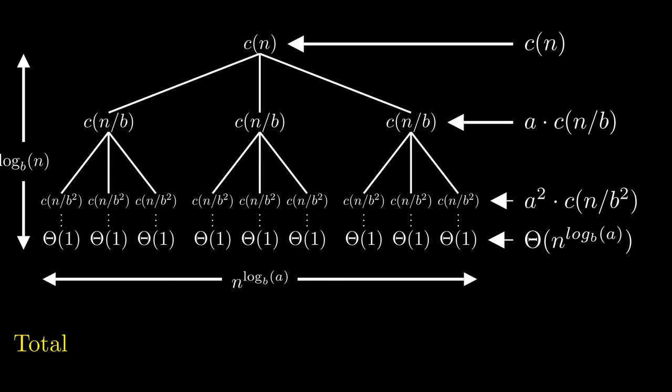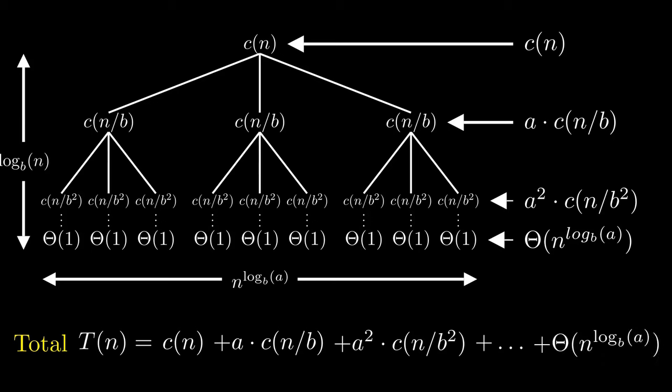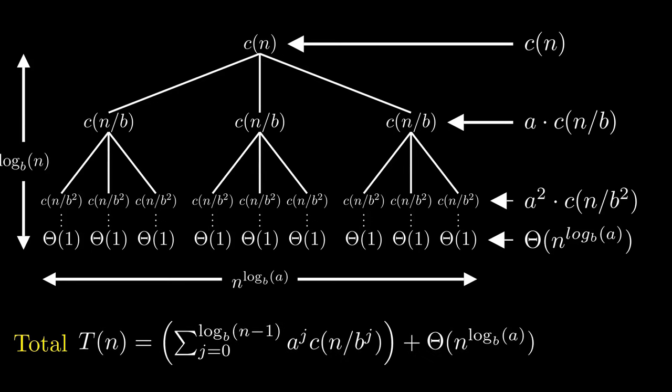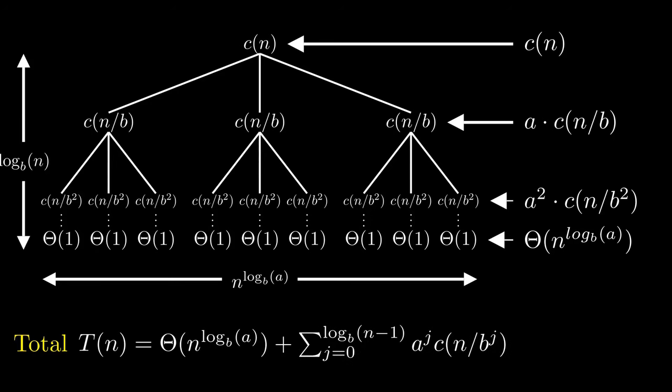From this, we can find a closed form of the recursion. Let's just write it out. So c(n) for the first level, a times c of n divided by b for the second level, a squared times c of n divided by b squared for the third level and so on and so forth, until we have theta of n to the power of log b a in the last level. Lastly, we can simplify this to a sum. And we can remove the brackets by reordering it.